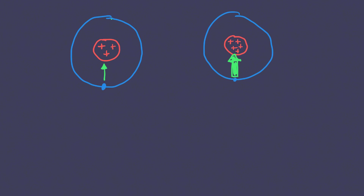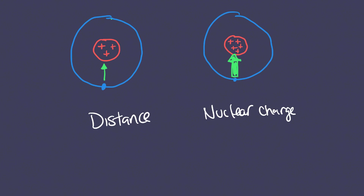Now let's compare the two variables. We know that distance can change the electrostatic attraction between electrons and protons. We also know that nuclear charge can change the Coulombic attraction between protons and electrons. Which one has a stronger effect? The one that is stronger is distance. Distance tends to have a stronger effect on electrostatic attraction than nuclear charge itself.